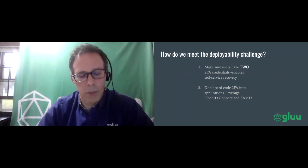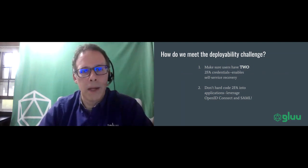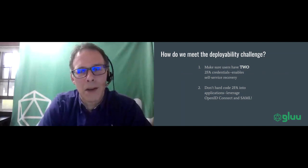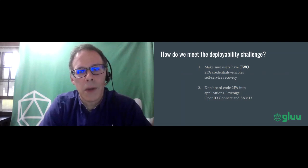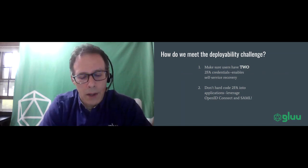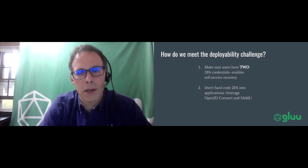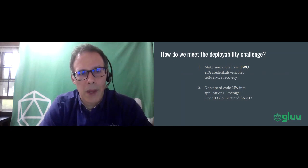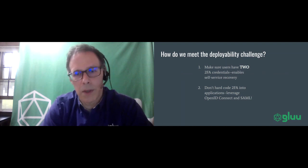The second issue around deployability has to do with centralizing authentication so you don't have to one-off integrate two-factor authentication into different apps. It's already been a best practice not to hard-code password authentication — we don't want every app to hold its own password or even see the password. In security, it's an anti-pattern to implement authentication code in your application. The best practice is to use open standards for federated identity like OpenID Connect and SAML. I'm going to dive into how you use 2FA features when using OpenID Connect and SAML.